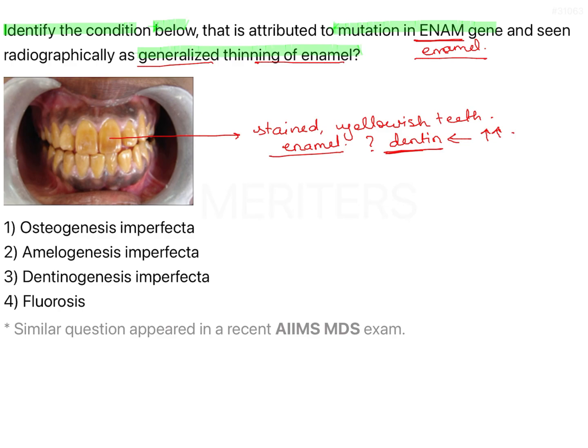Looking at the options, we have: osteogenesis imperfecta, amelogenesis imperfecta, dentinogenesis imperfecta, and fluorosis.